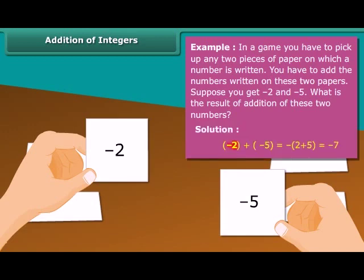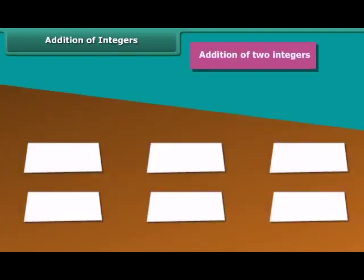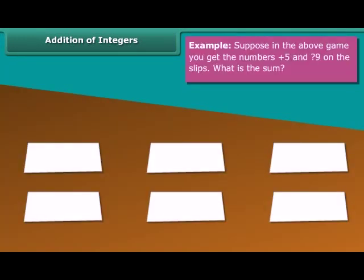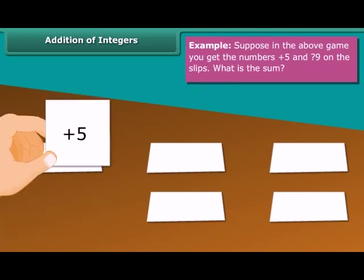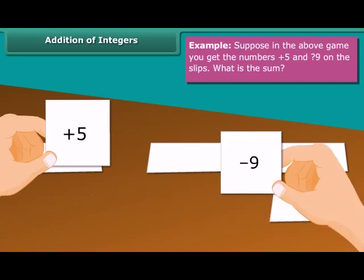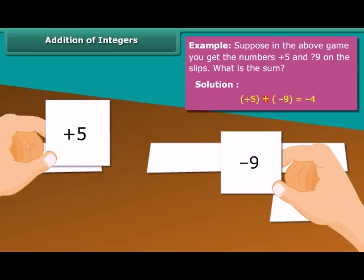Minus 2 plus minus 5 is equal to minus 2 plus 5, which equals minus 7. Addition of two integers. Example: Suppose in the above game, you get the numbers plus 5 and minus 9 on the slips. What is the sum? Plus 5 plus minus 9, which is equal to minus 4.